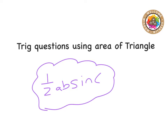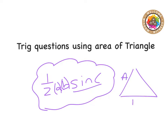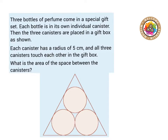Today we're looking at three questions using the area of a triangle formula, which is half a b sine c — or a times b times the sine of the angle in between. So for any triangle, if this is a and this is b, then this would be the sine of c, the angle in between.